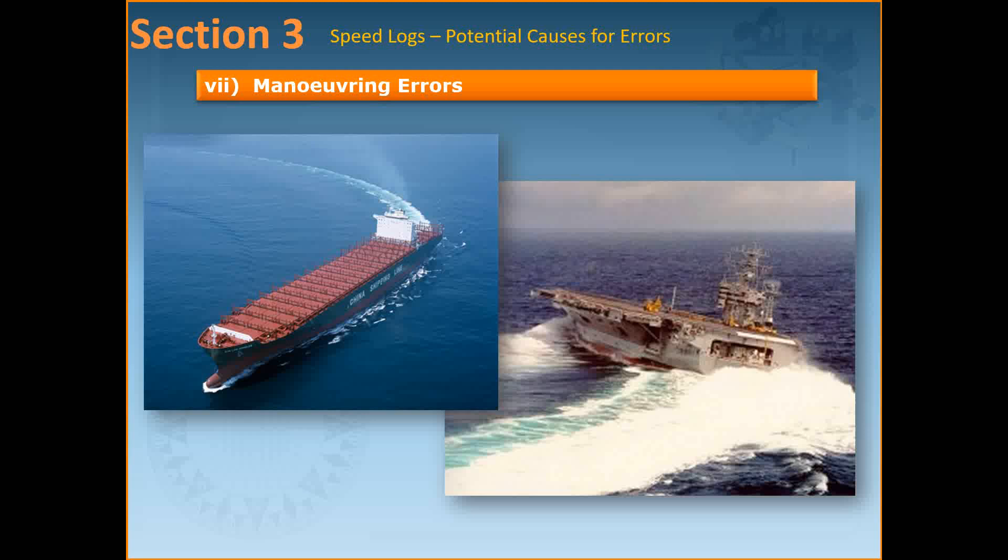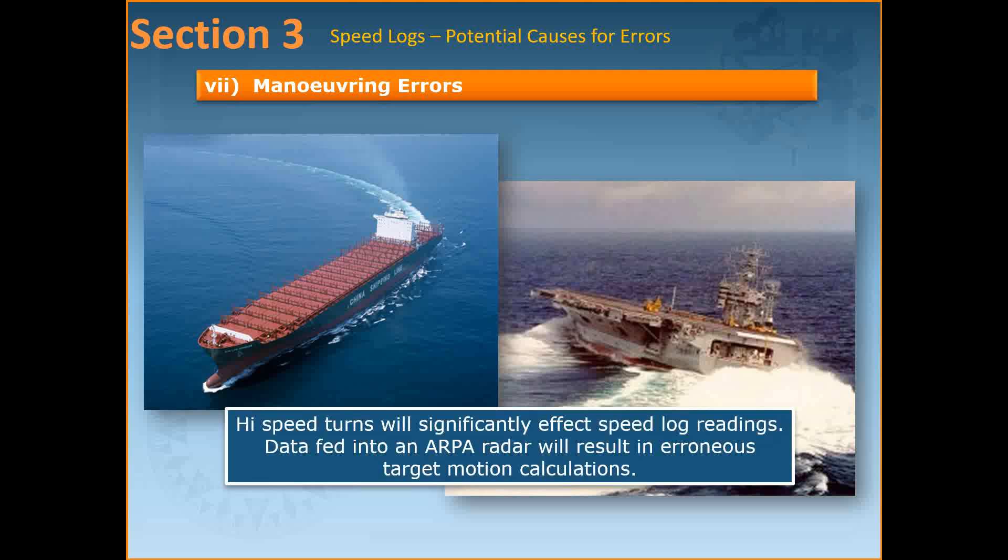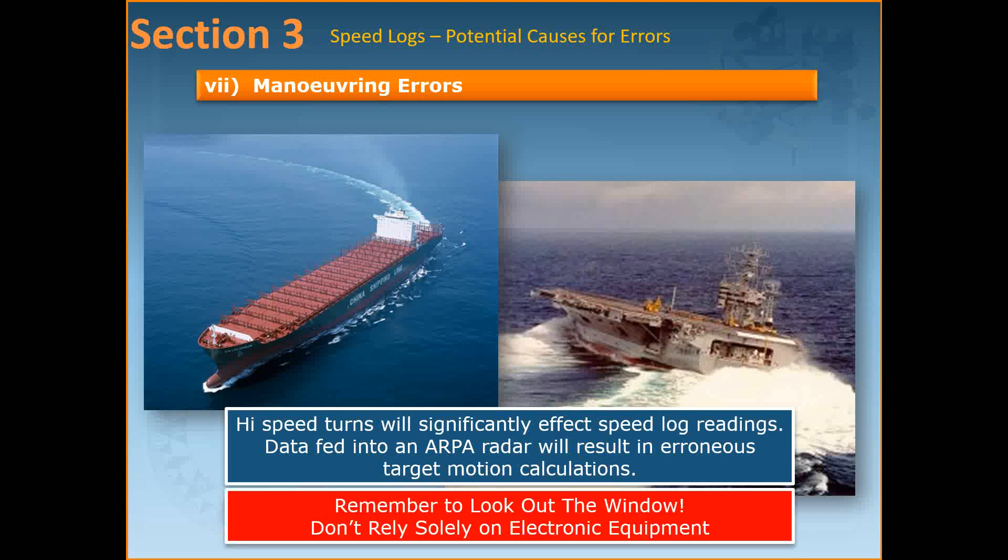Finally we have the maneuvering errors which can be significant especially for example in the input to an ARPA or radar during a high speed turn in a close quarter situation. High speed turns will significantly affect speed log readings because the data fed into an ARPA radar will result in erroneous target motion calculations. So remember to look out the window and don't rely solely on the electronic equipment because when the vessel is making a high speed turn, the flow of water across the sensor of the speed log can be varying at varying speeds, because of which the speed log gets confused and can't measure the speed of the vessel accurately.